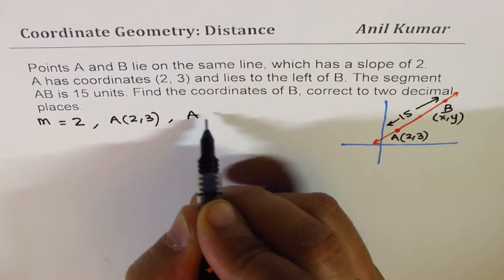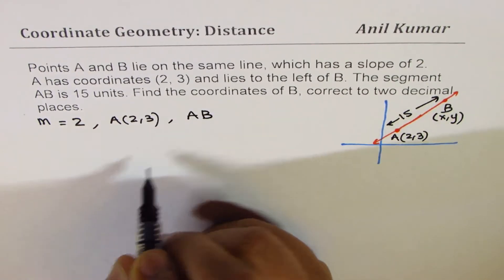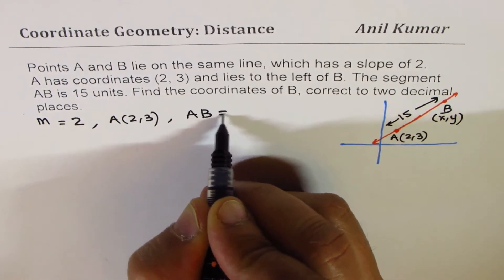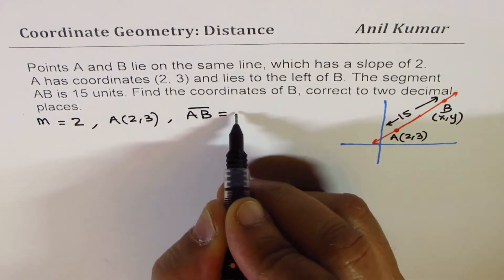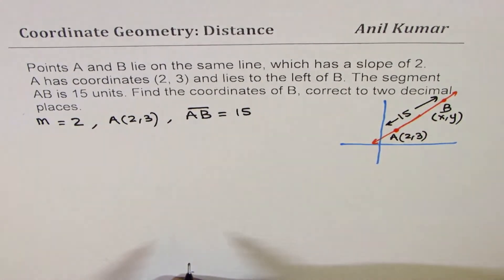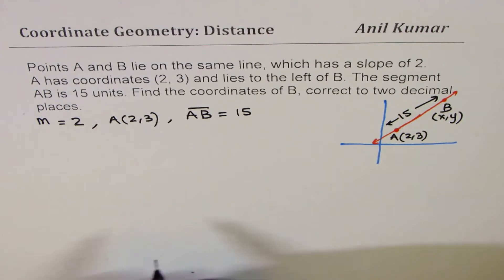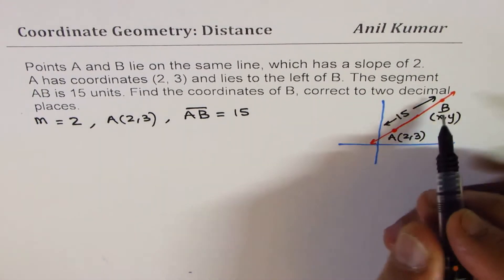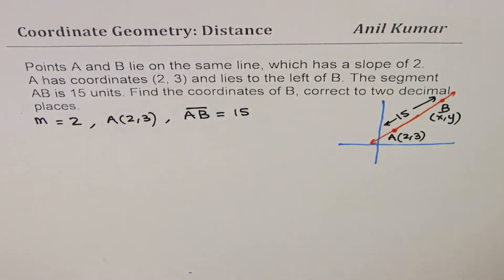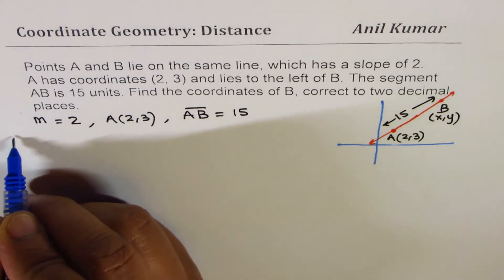So, we want to know what is B, where the distance A to B, that distance is 15, right? So, let us begin by saying that, what is the equation of the line? So, first step is to find equation of line.